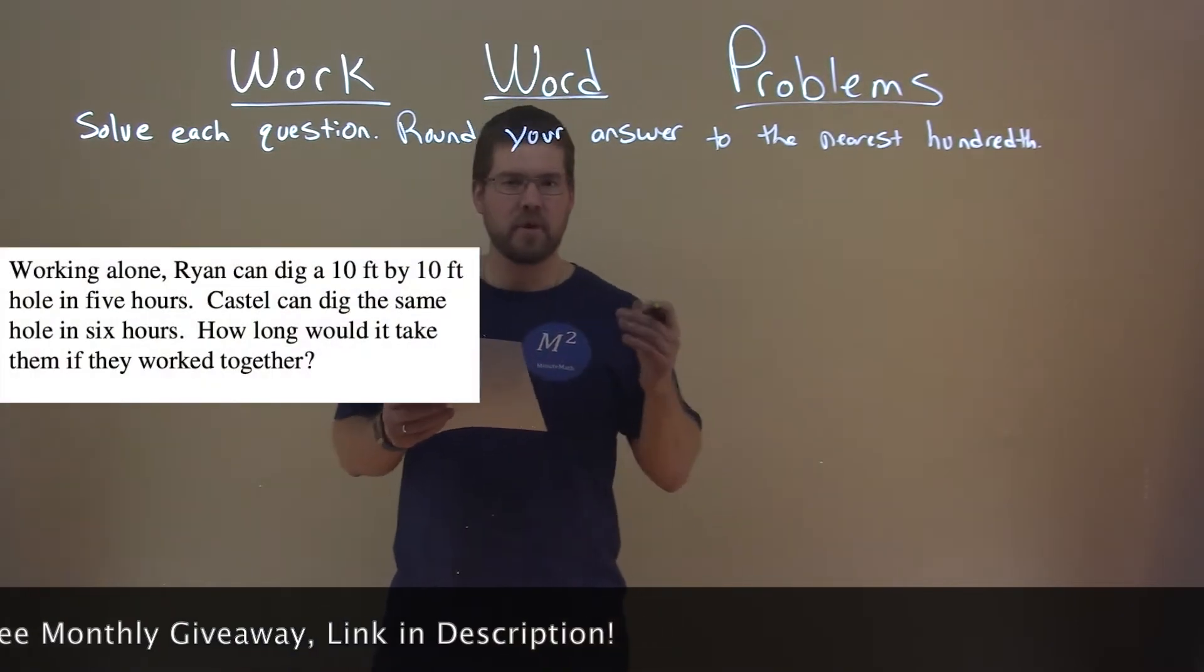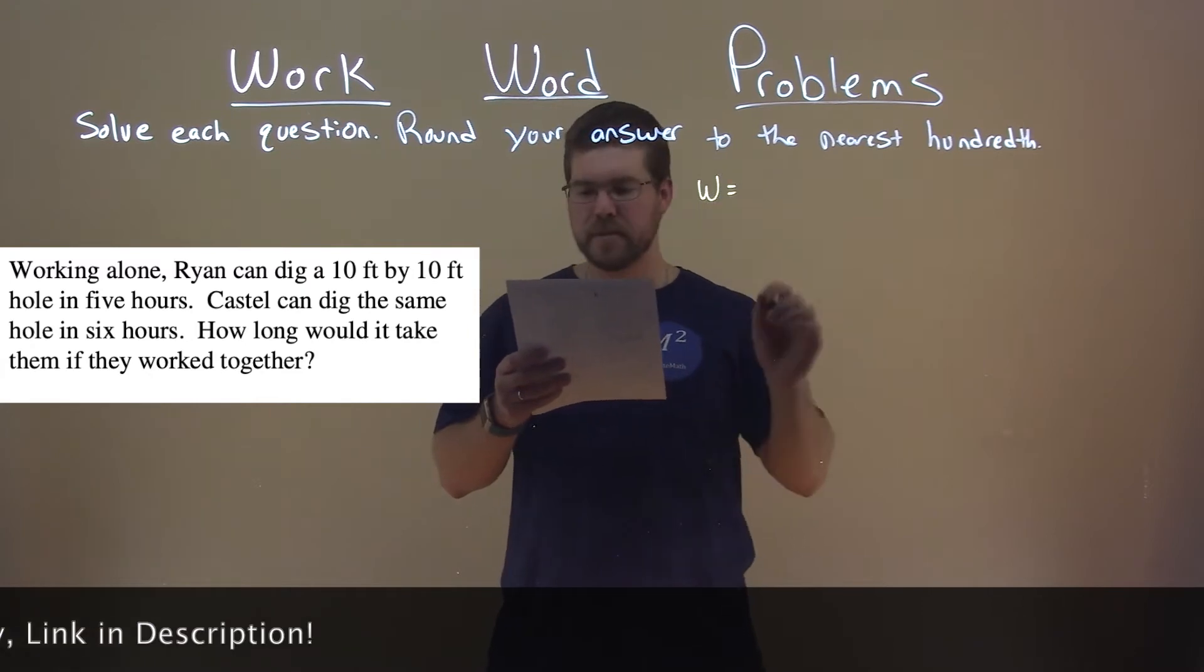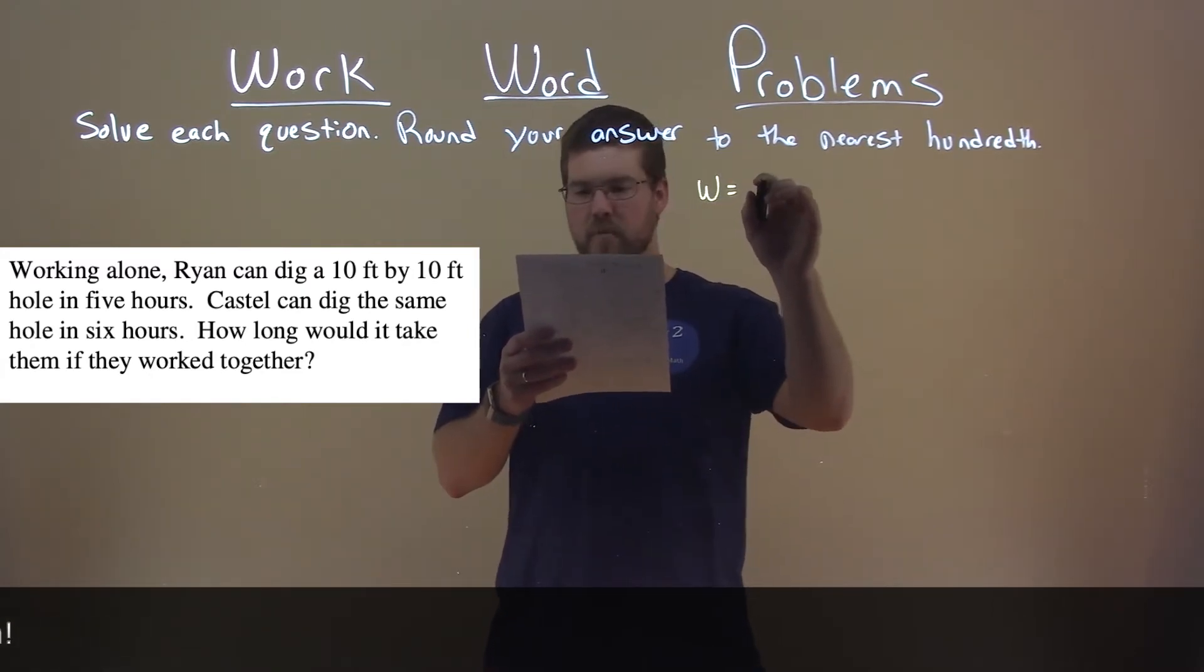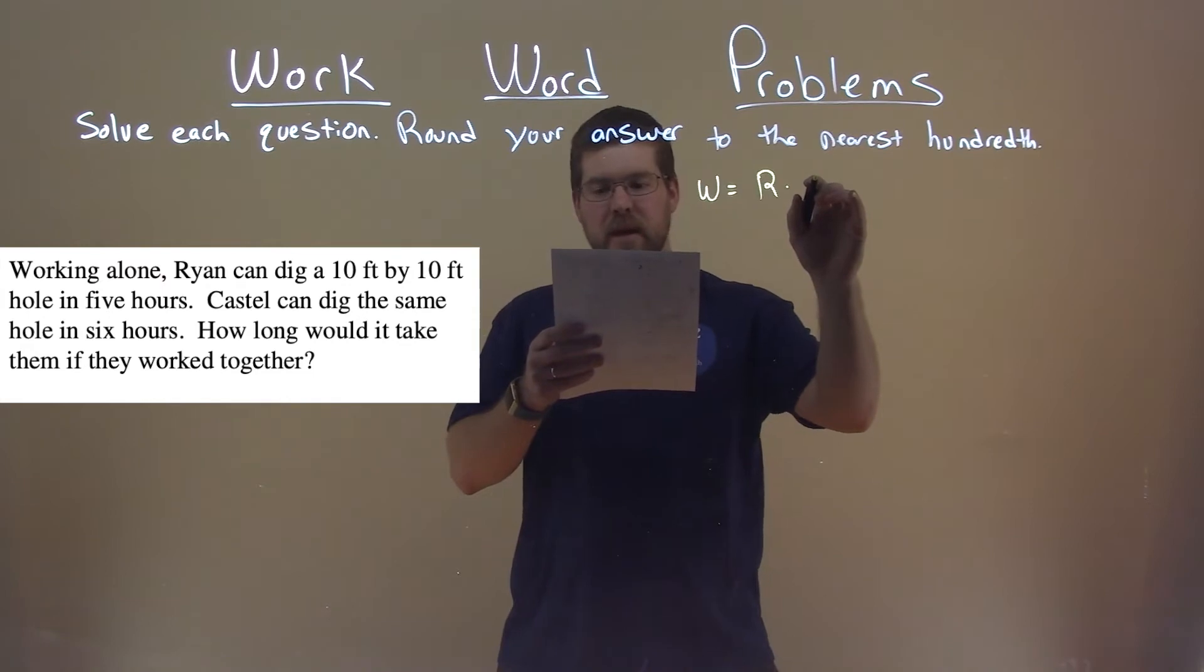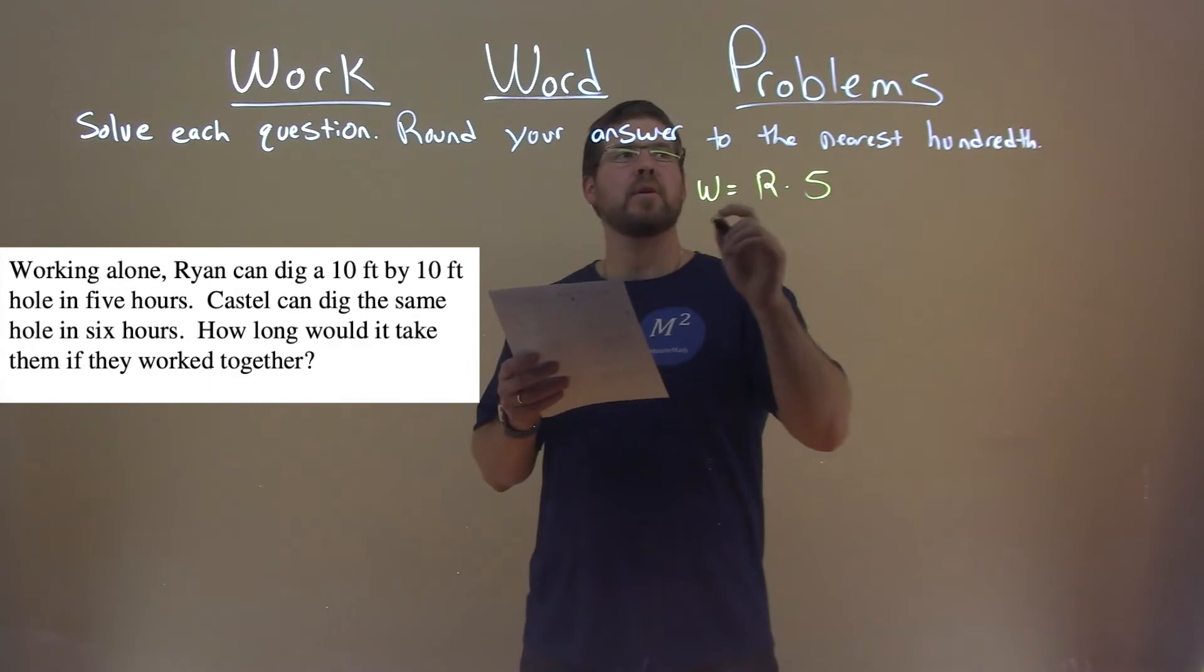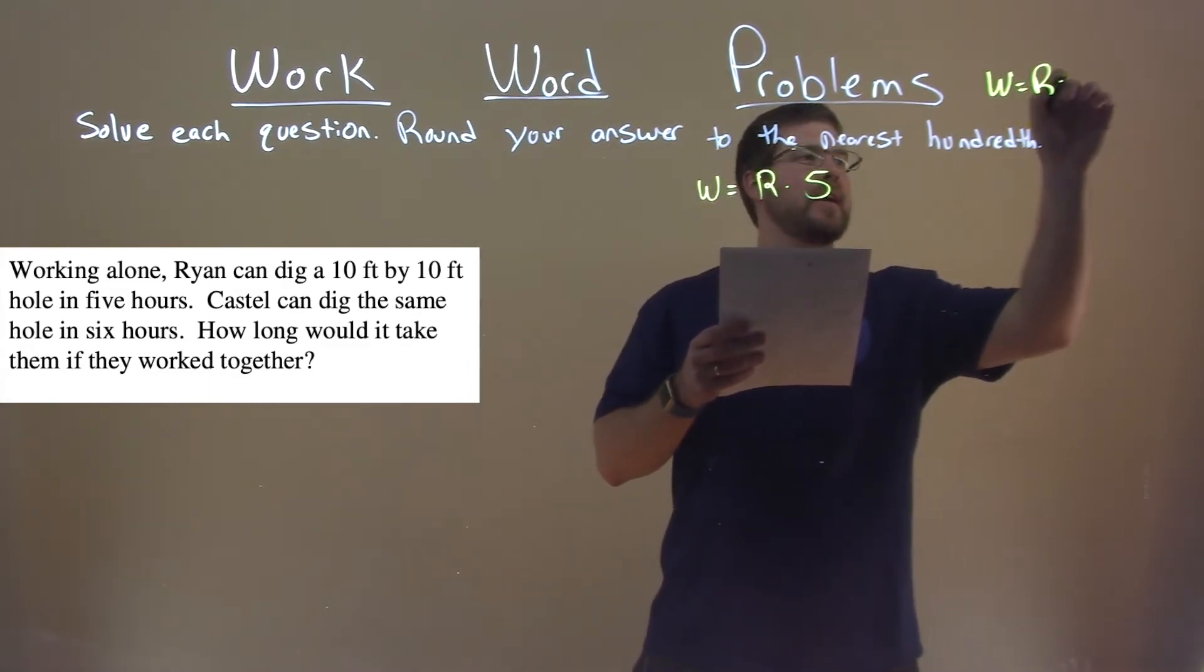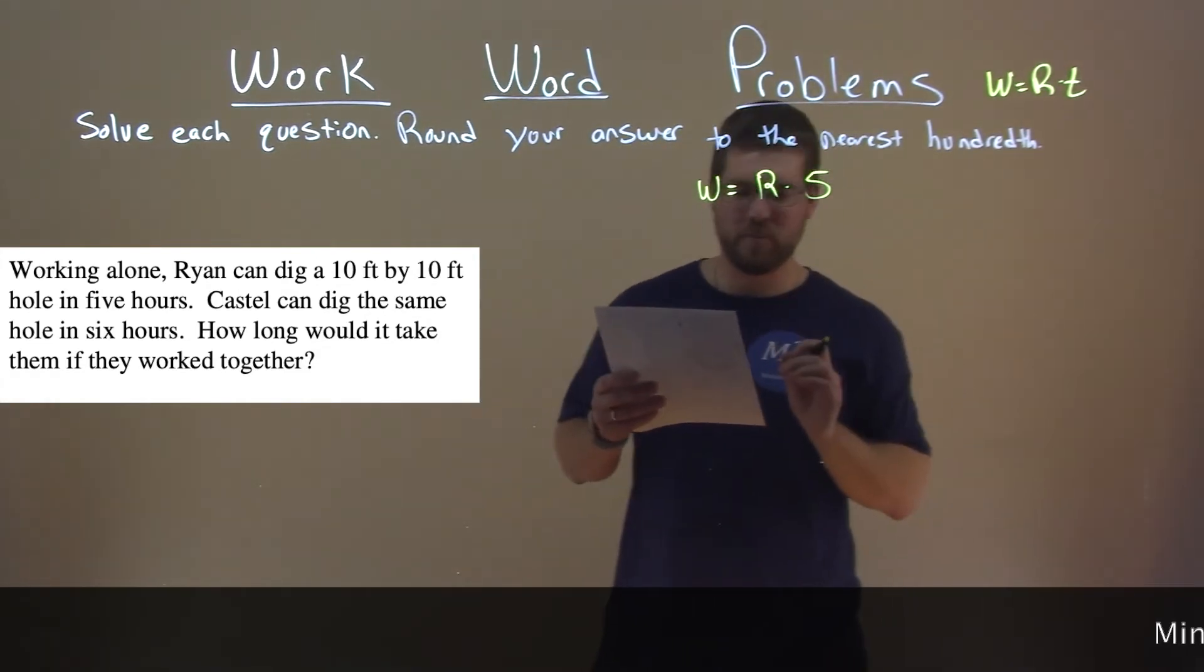So the first thing we want to note here is the work amount of Ryan is Ryan's rate times the amount of time it takes him, which is five hours. And a little note to ourselves here, work is equal to rate times time. And that R stands for Ryan's work rate.